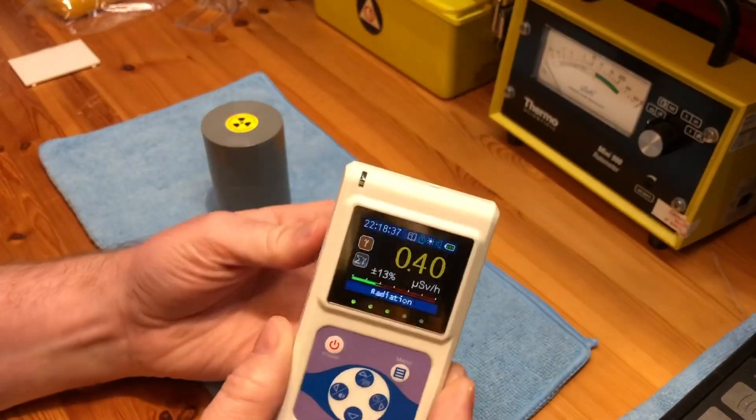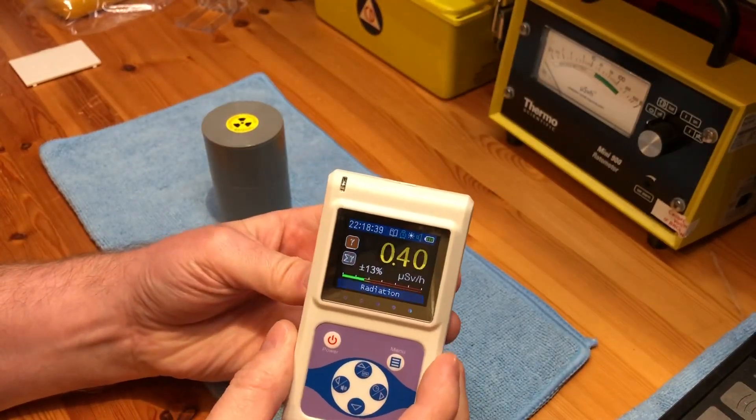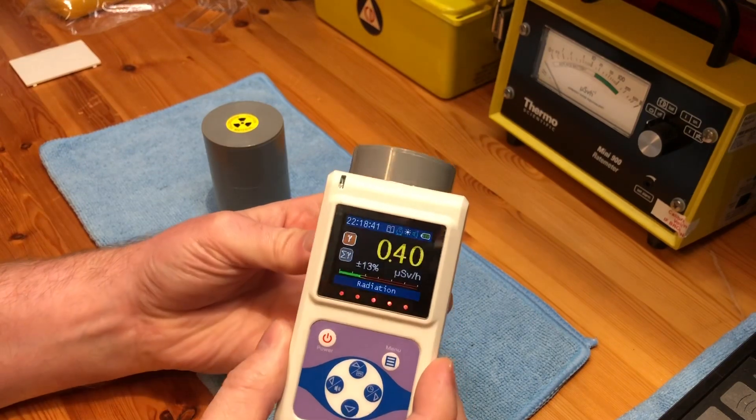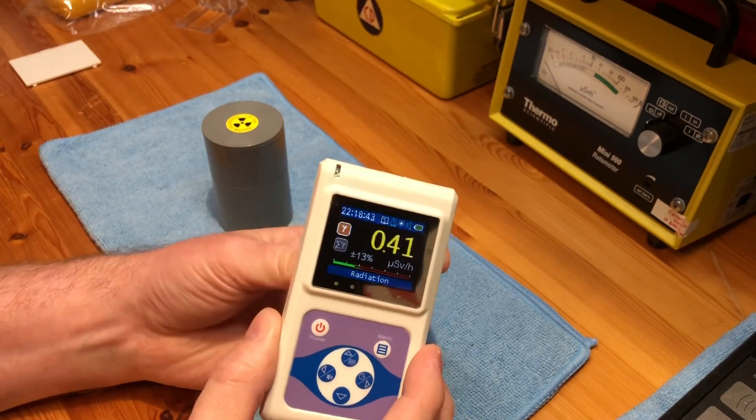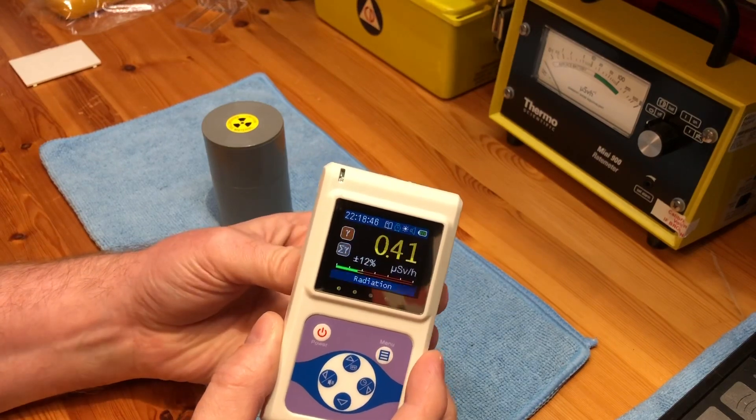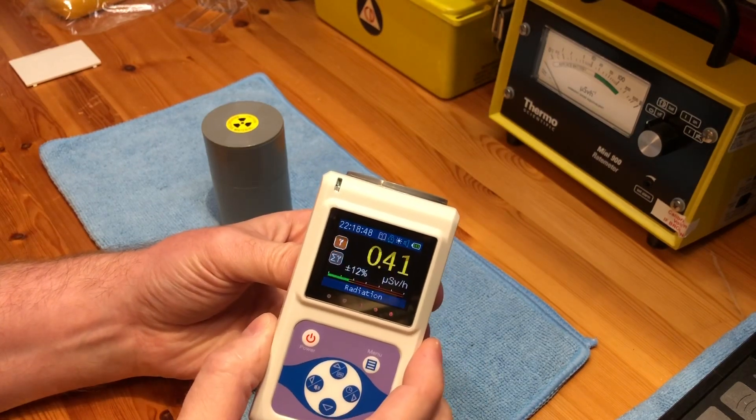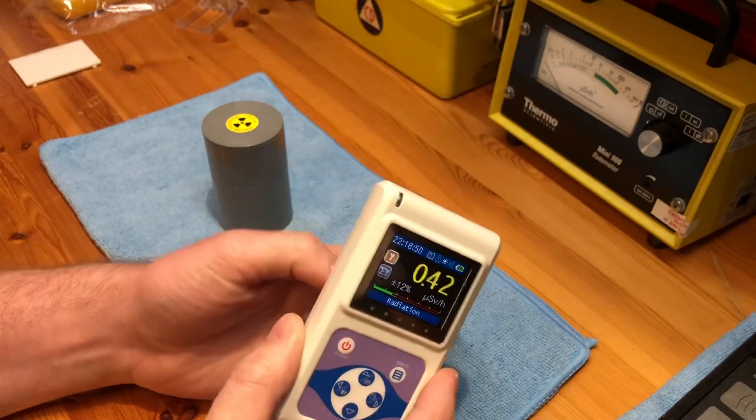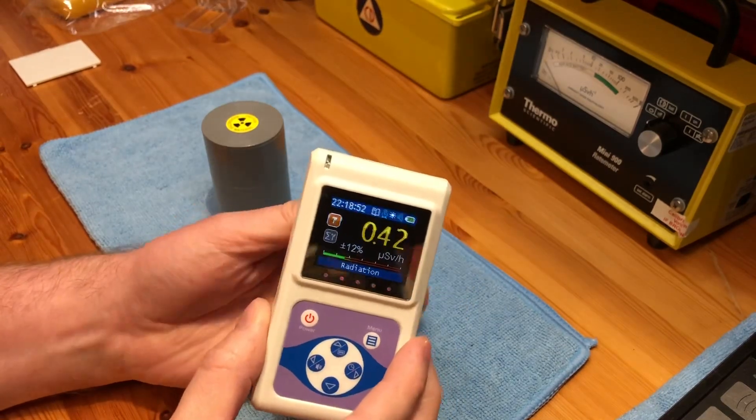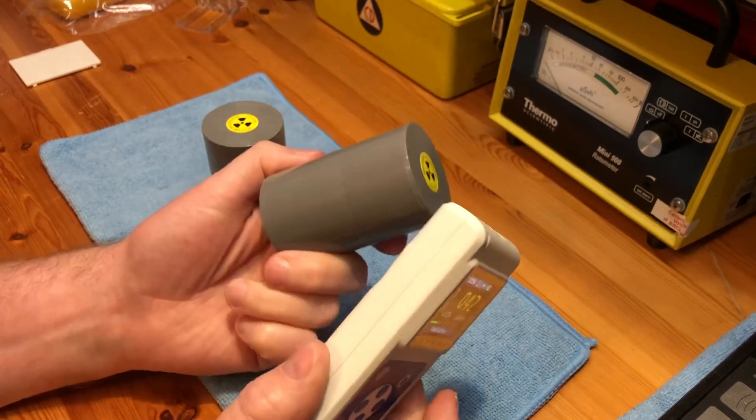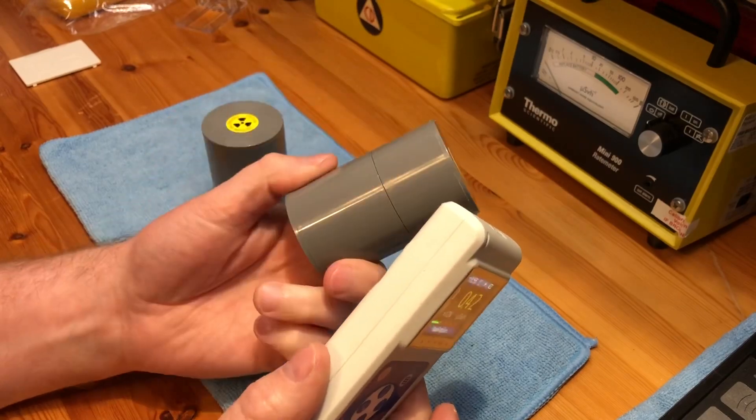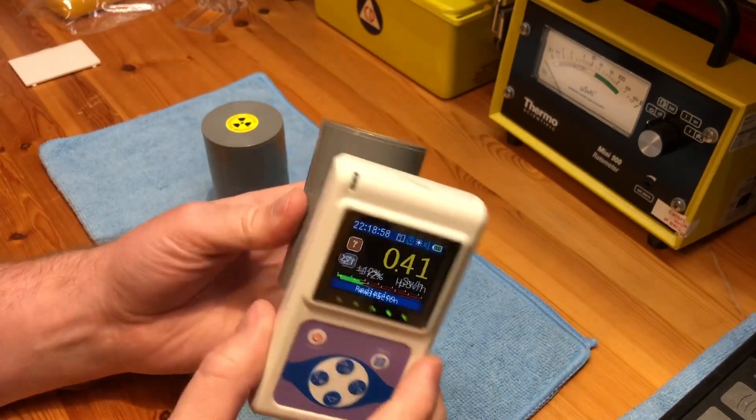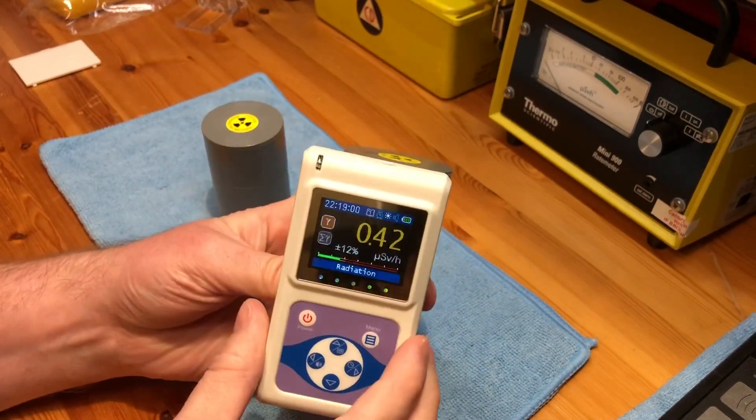So what I'm going to do first of all is put it up to this, and as you can see it's literally not picking up very much more. 40 microsieverts is really nothing to be worried about, especially as it's going to be in another box on a shelf way above my head so it's not going to be anything to me. So that's brilliant.